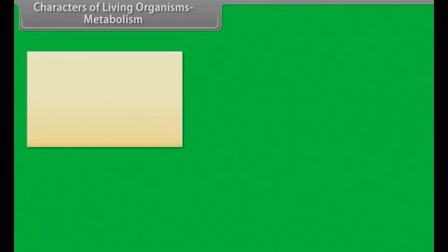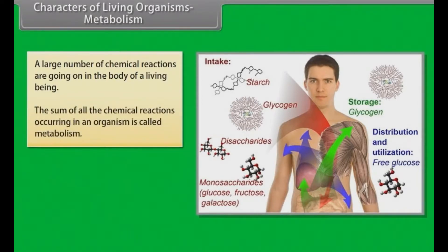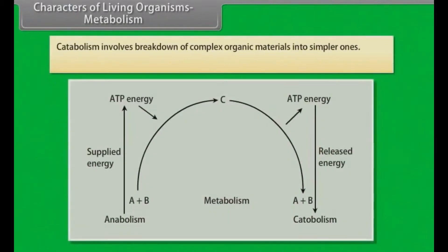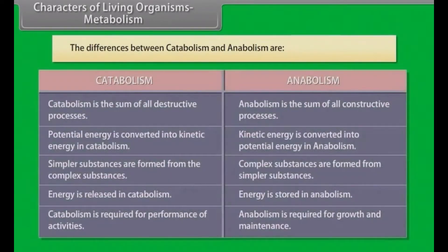A large number of chemical reactions are going on in the body of a living being. The sum of all the chemical reactions occurring in an organism is called metabolism. Metabolism has two main types: catabolism and anabolism. Catabolism involves the breakdown of complex organic materials into simpler ones, while anabolism involves the building up of complex organic substances from simpler ones.